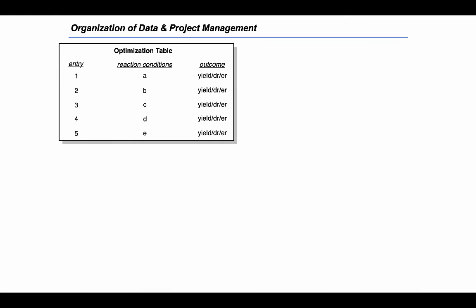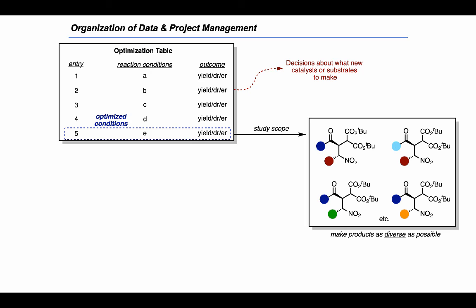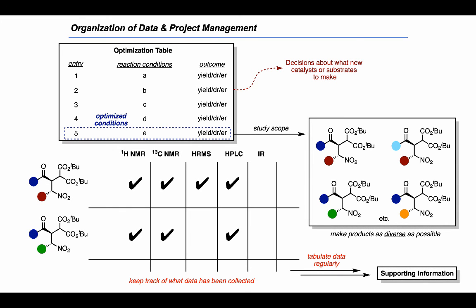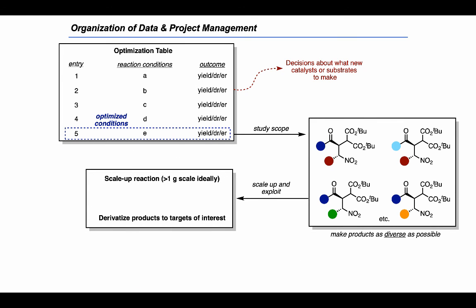When organizing a methodology project, identify a parent reaction and use it to evaluate outcomes, placing data in an optimization table. The results and trends inform decisions about what new catalysts and substrates to make. Once optimized conditions are arrived at — a process that can take months or even years — we study how broadly each component of the reaction can be stretched to make products as diverse as possible. It's important to track data in an electronic or paper spreadsheet so we always know what's missing, tabulate data regularly in publishable supporting information format, carry out gram-scale examples, and derivatize products to targets of interest.